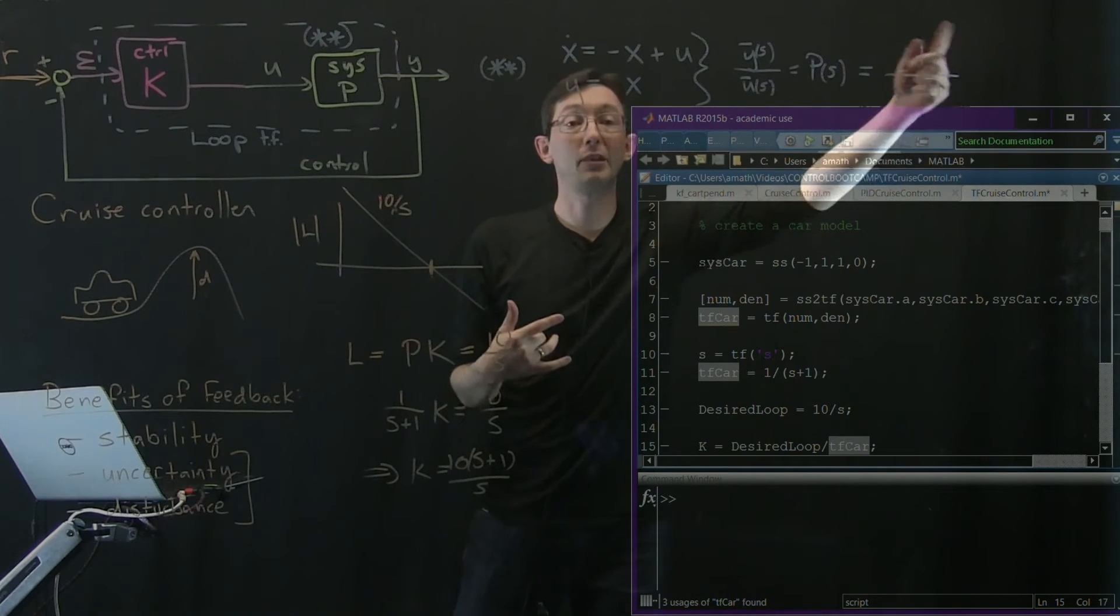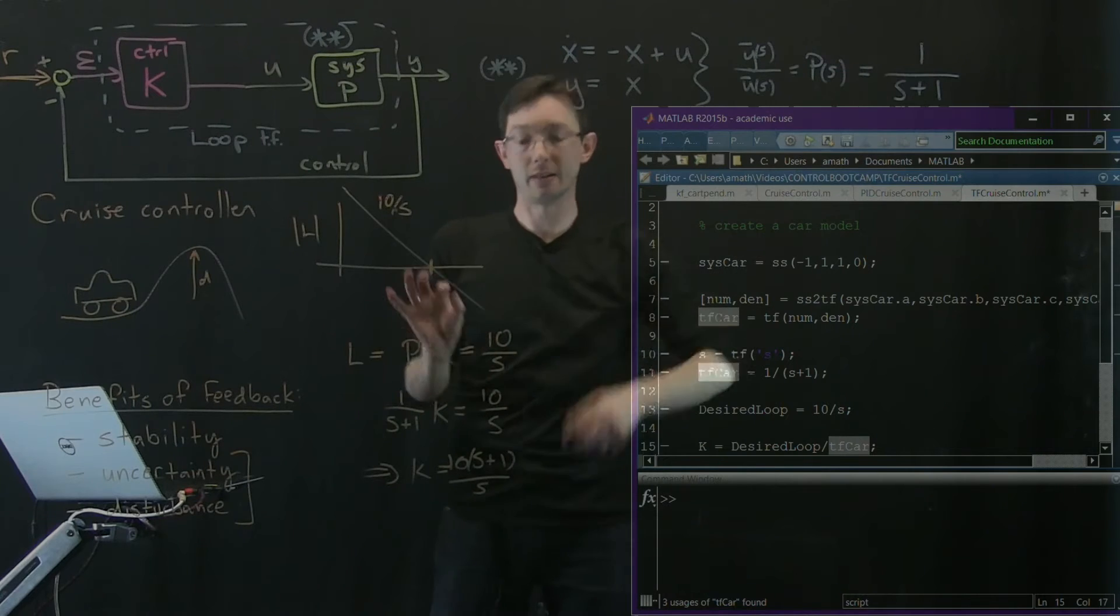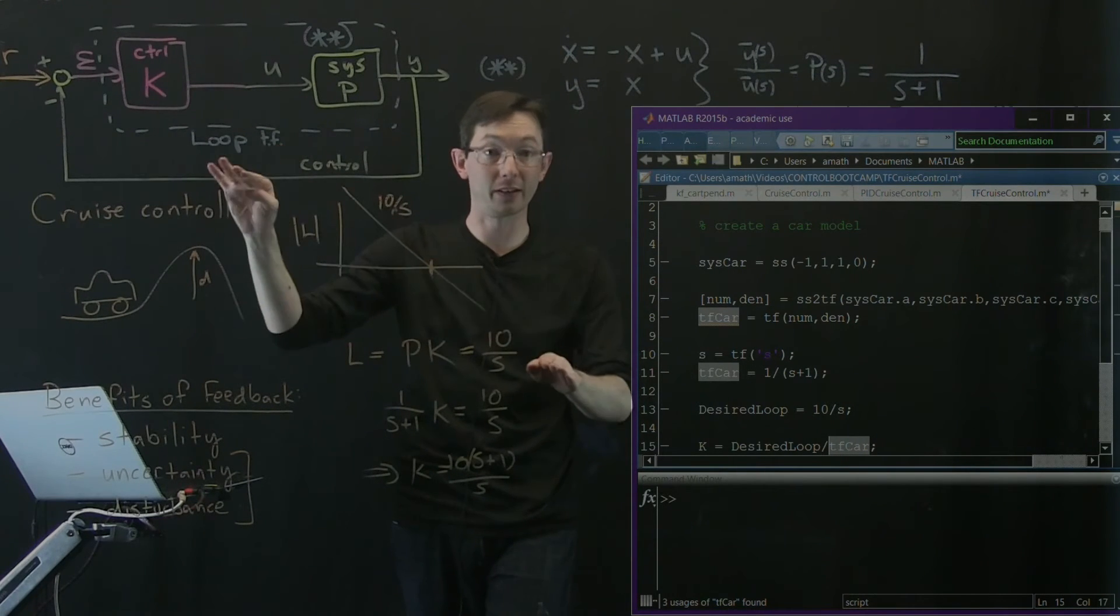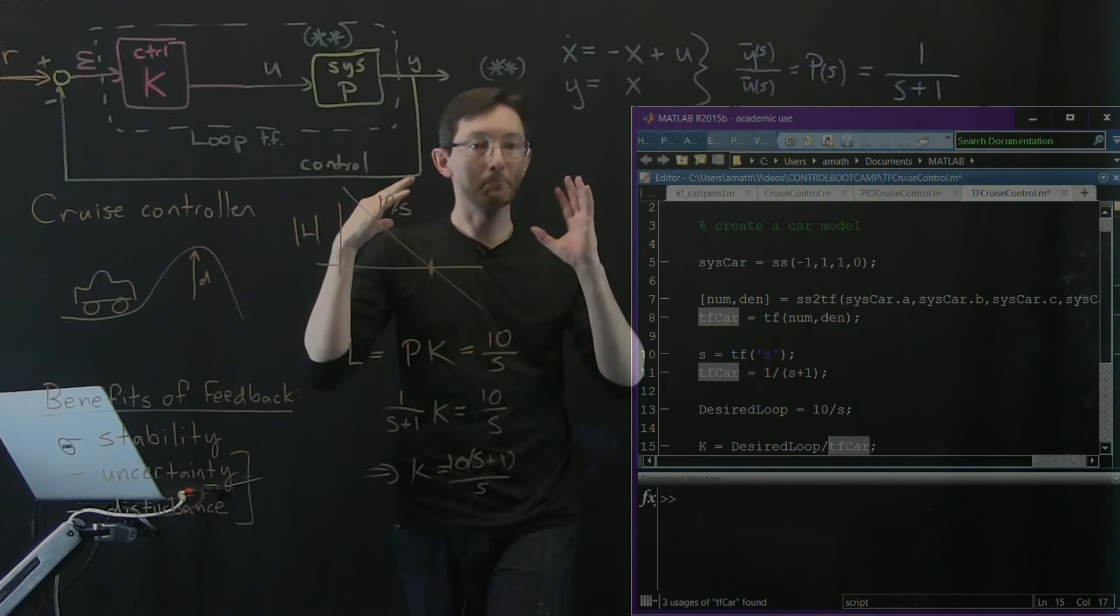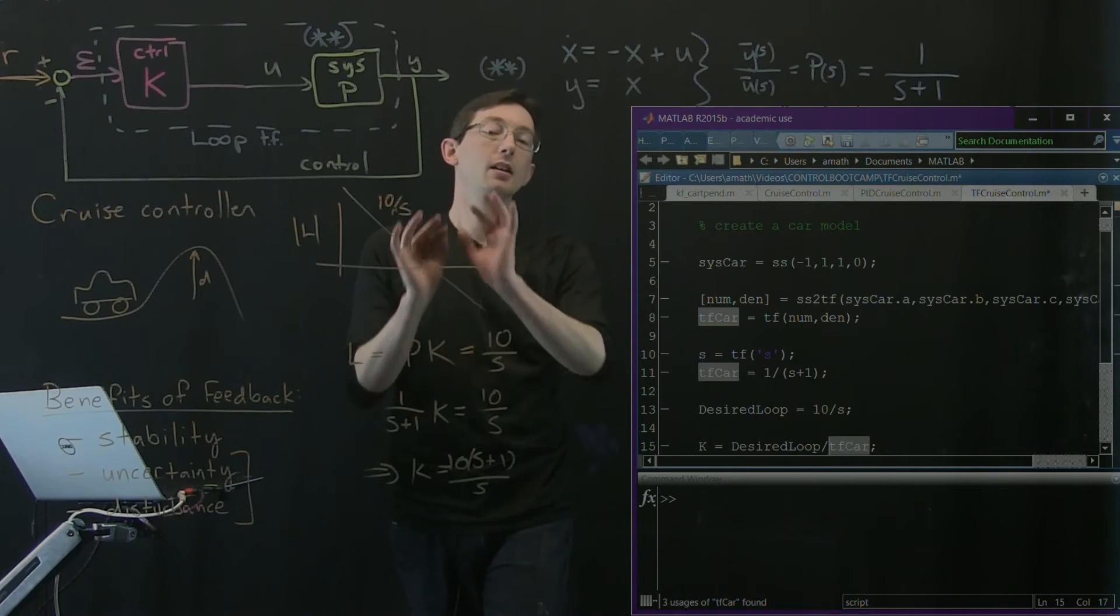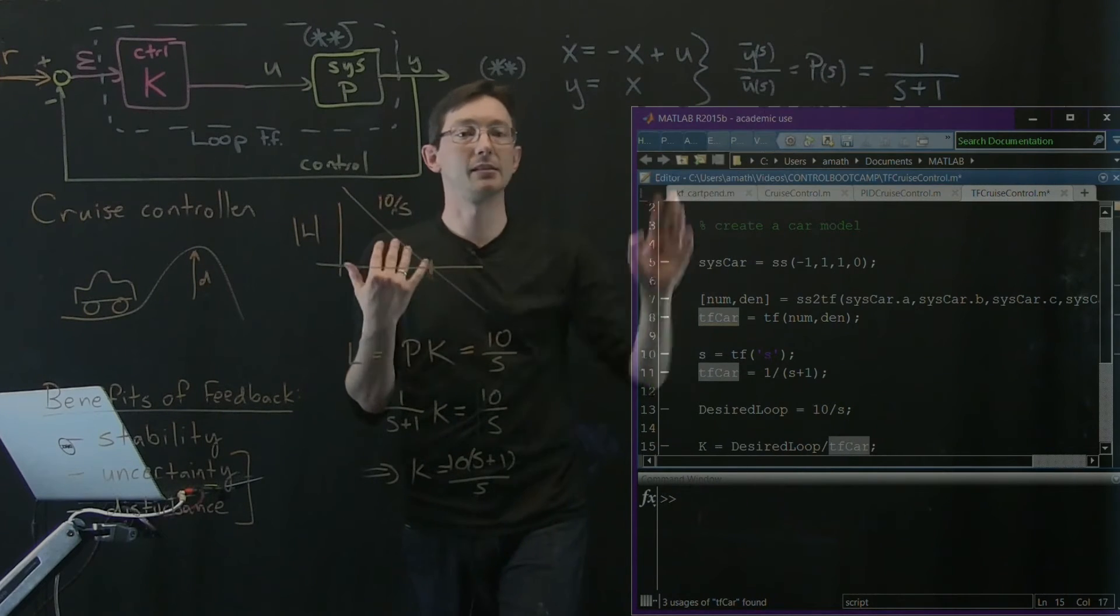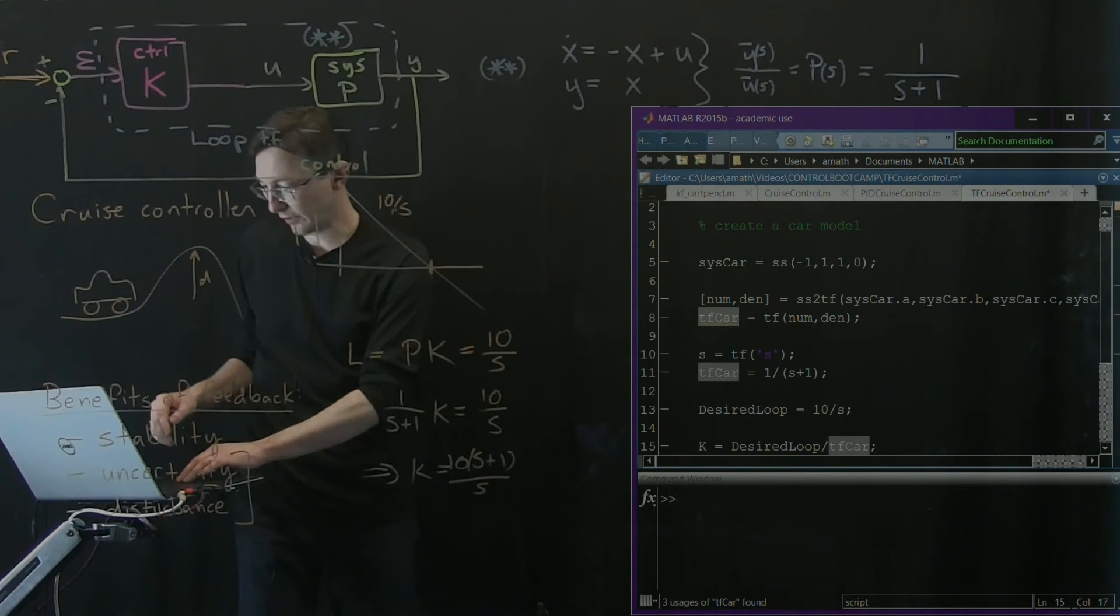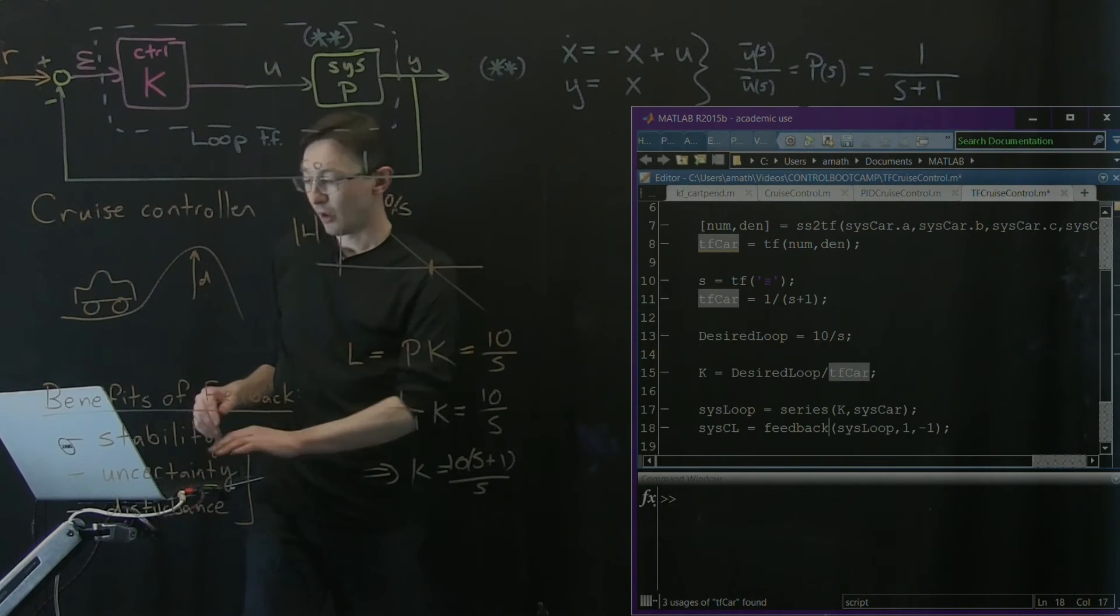Now again, there will be lots of plants where this is a really bad idea and where you cannot, with control, make your function look perfectly like an integrator. But for now, we'll talk about those later. We'll talk about how to adjust this to make it more robust. But for now, in this simple case, we're just going to invert our plant and get this integral loop transfer function.